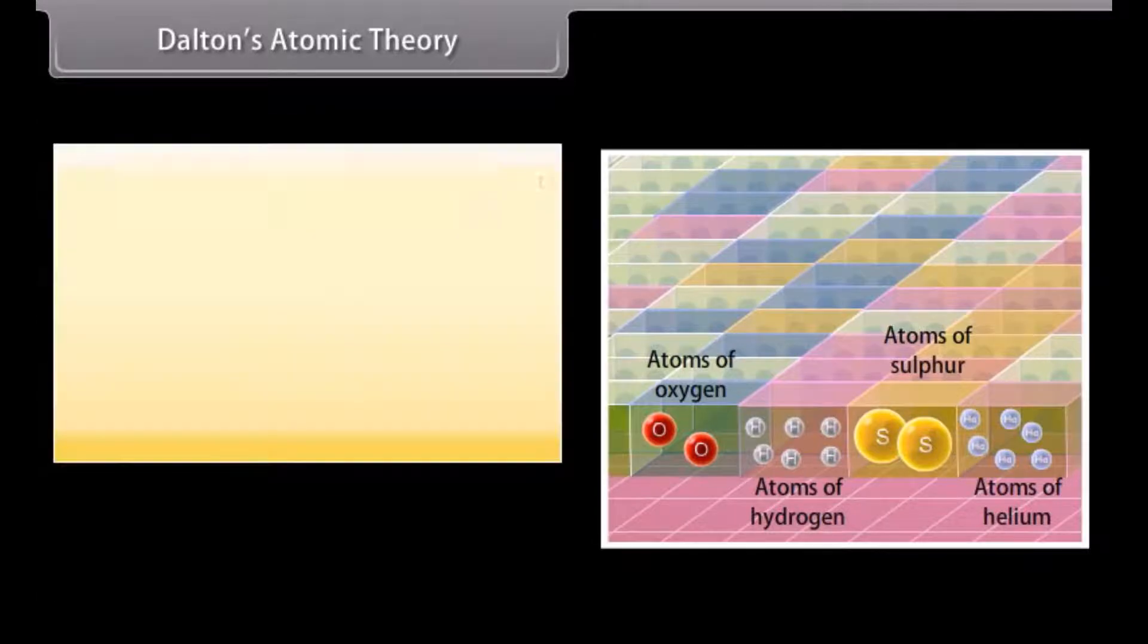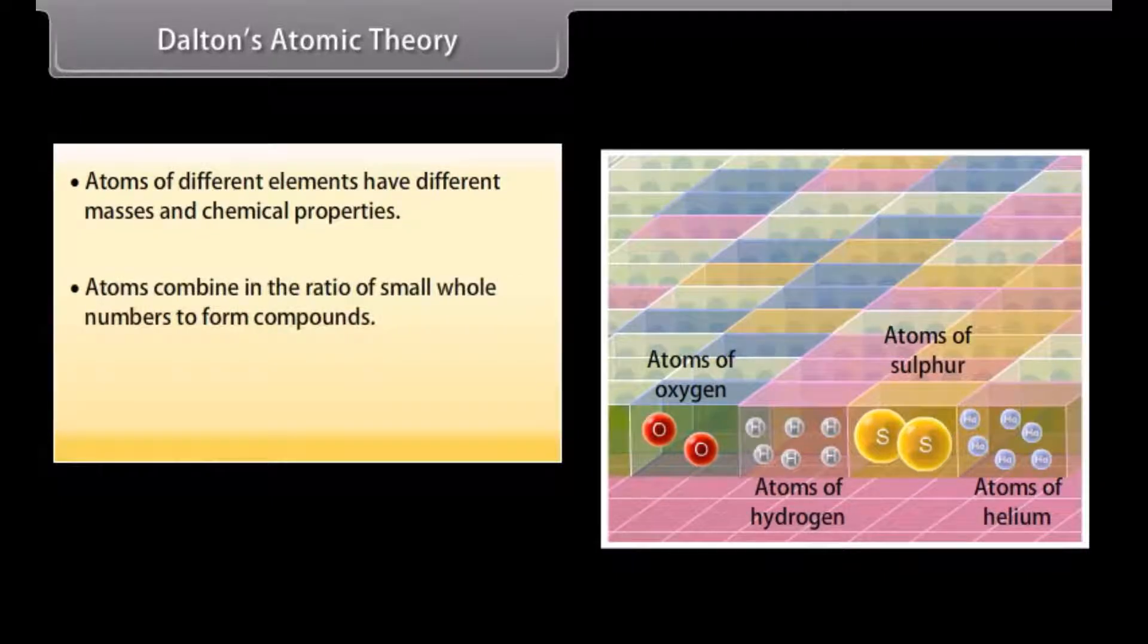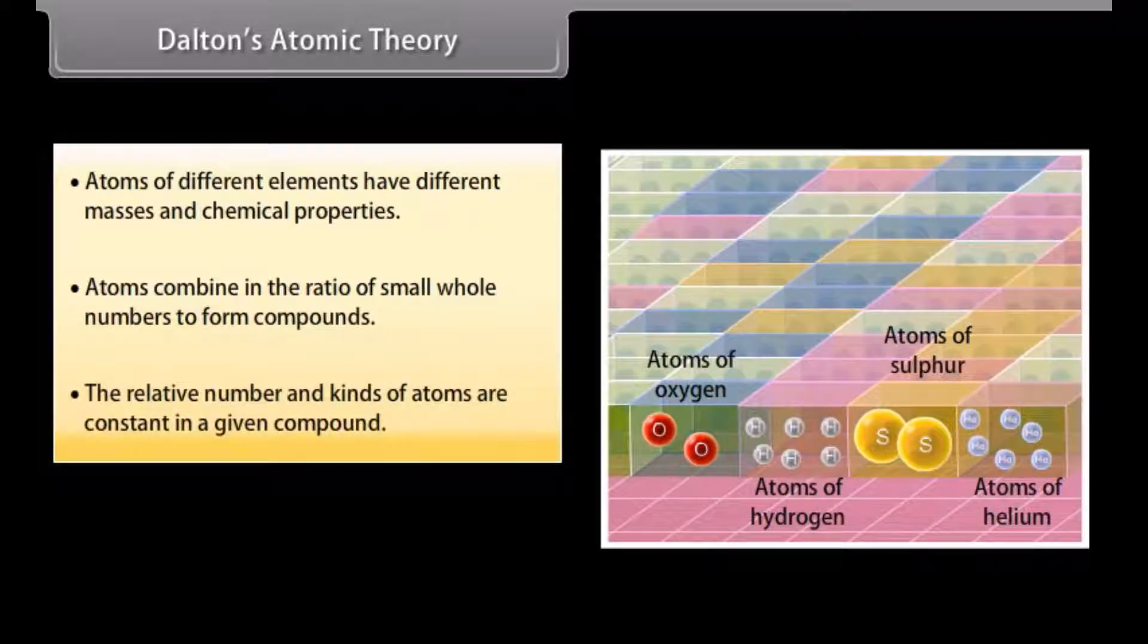4. Atoms of different elements have different masses and chemical properties. 5. Atoms combine in the ratio of small whole numbers to form compounds. 6. The relative number and kinds of atoms are constant in a given compound.